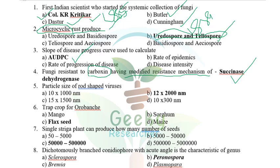The particle size of rod-shaped viruses — they gave options like 10×2015, 1500, and I thought it's 12×2000 nanometers, but I have a little doubt about this. Please don't treat all these answers as 100% right — approximately 95% of the answers we are mentioning are right; maybe 5% may be wrong. The trap crop for Orobanche (Striga) is flax.